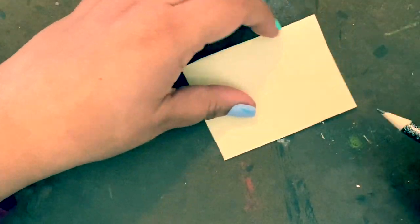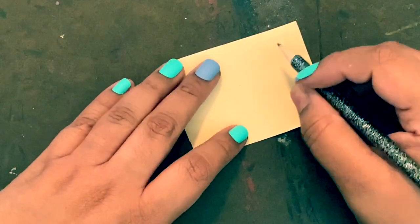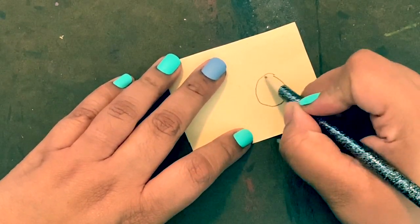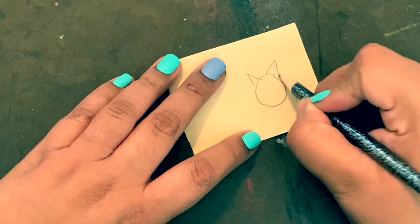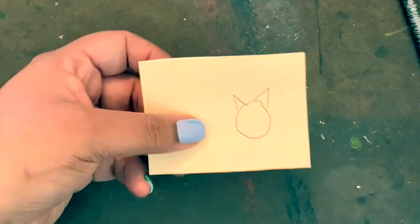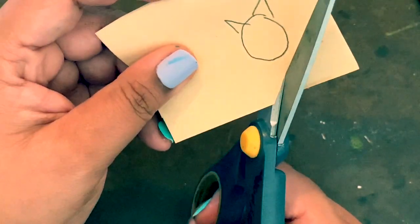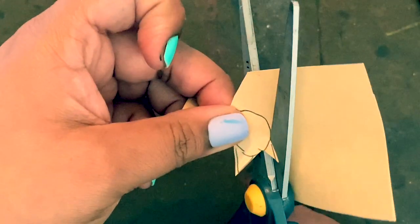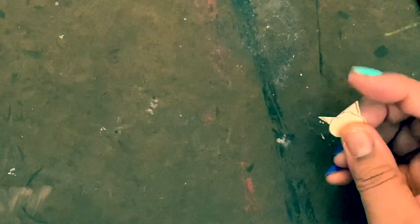And then what you're going to do is you would draw your figure. So let's say that here's mine—I'm making a little cat. So what I would do is then I would color it and everything. You're going to cut it out. You're going to need glue too, so you're going to take your glue.